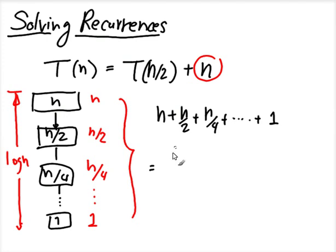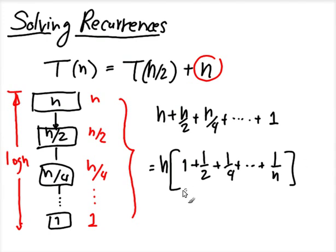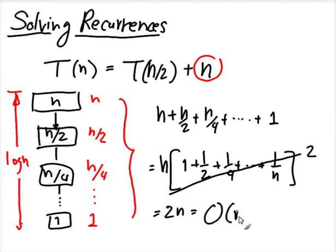How big is this sum? Factor n out, so it's n times (1 plus 1/2 plus 1/4 plus ... plus 1/n). This inner term is at most a constant — at most 2 — so this is 2n, which is O(n).